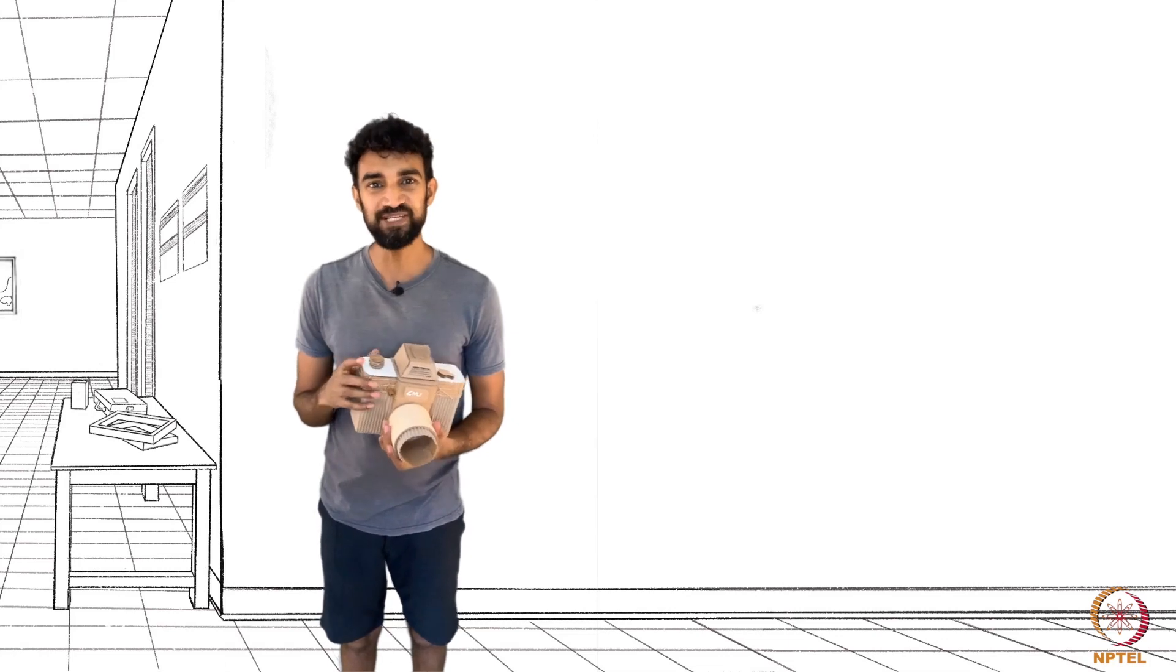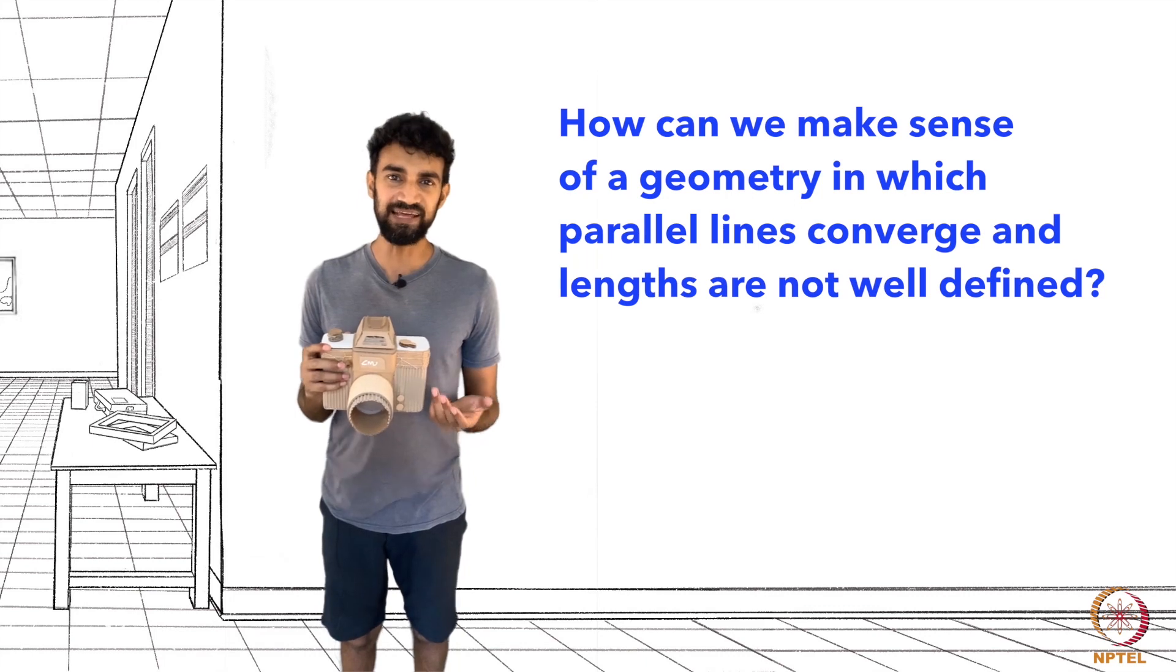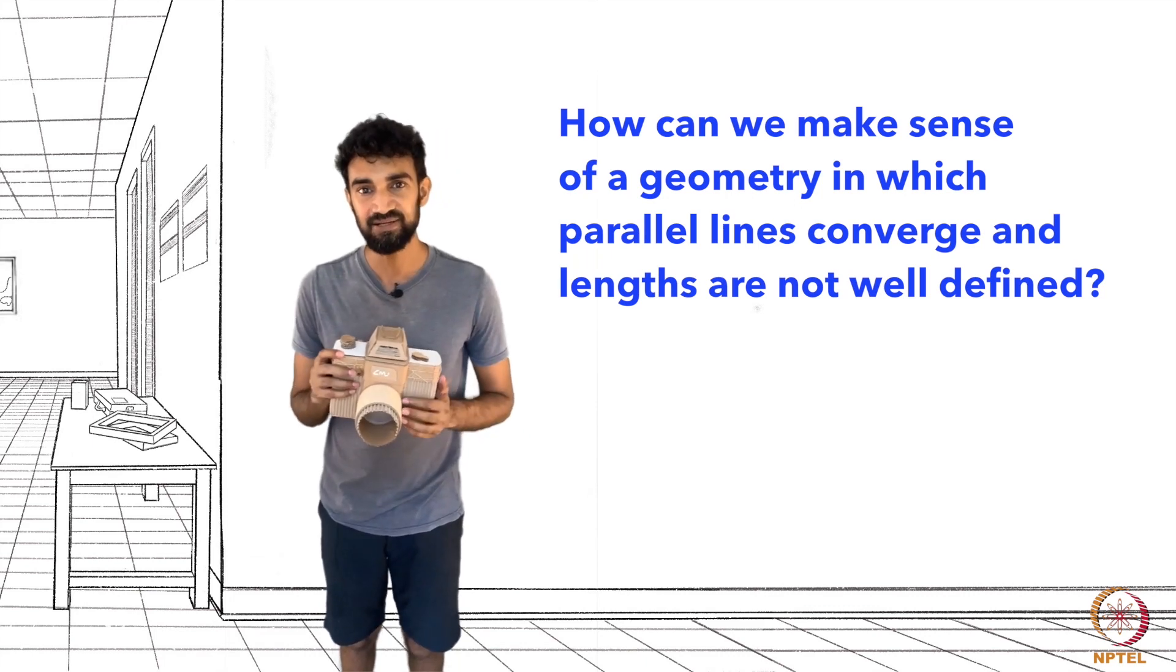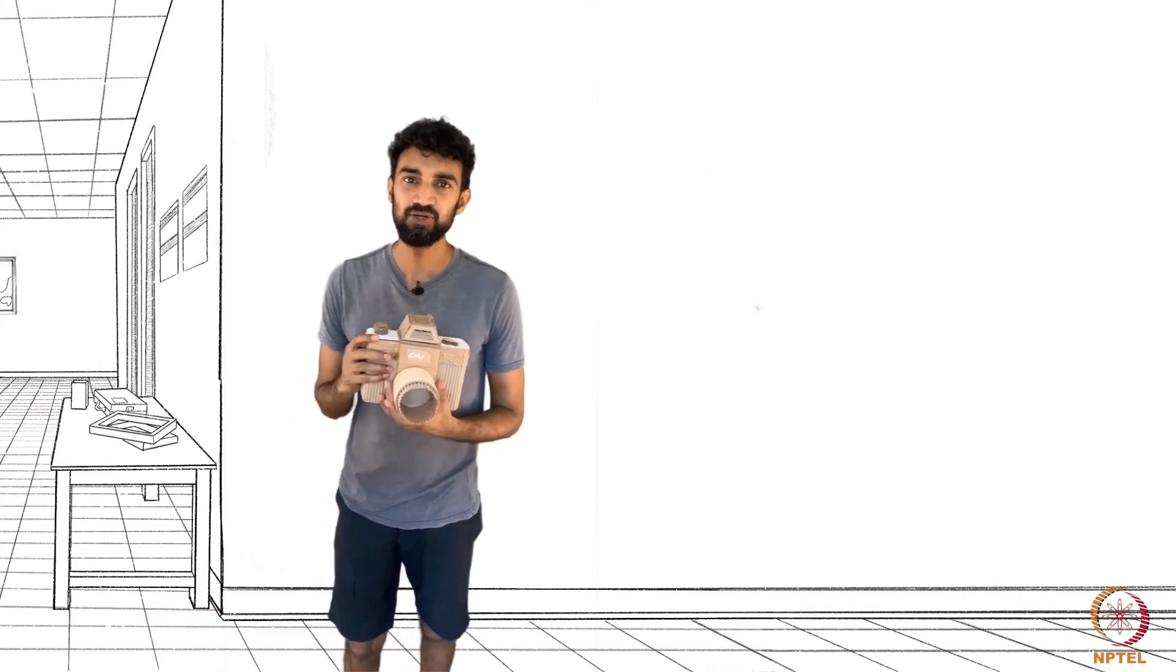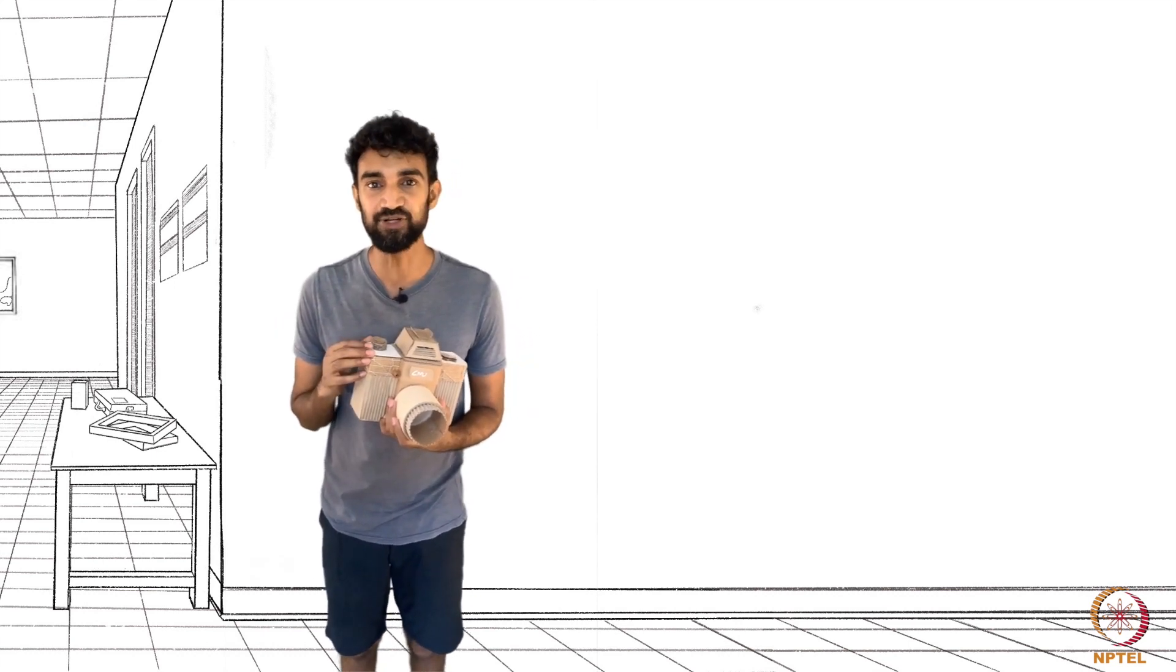But how on earth are we supposed to make sense of a geometry in which parallel lines converge and lengths and angles keep changing? Thankfully, we'll discover that our picture planes are governed by surprisingly elegant geometric properties.